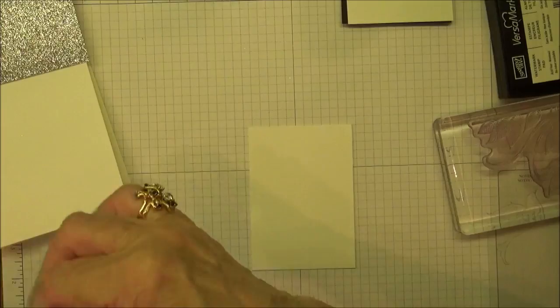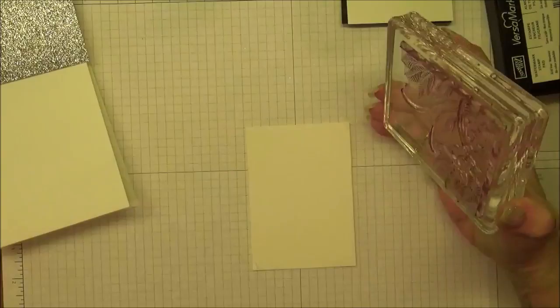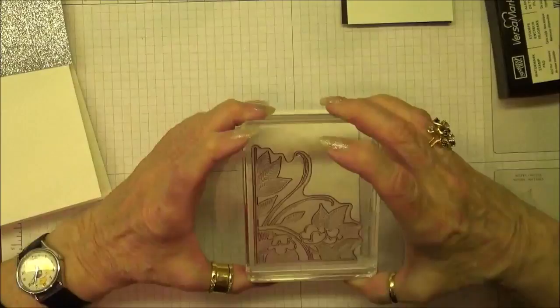The first thing that I want to do, and I'm always forgetting to do this, is to run over with my embossing buddy. What this does is it reduces the static, so you're less likely to get embossing powder all over everything that you're doing. So now that I've done that, we're just going to take the stamp and stamp this right on the cardstock.